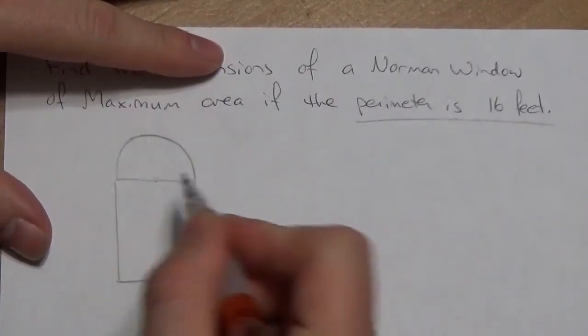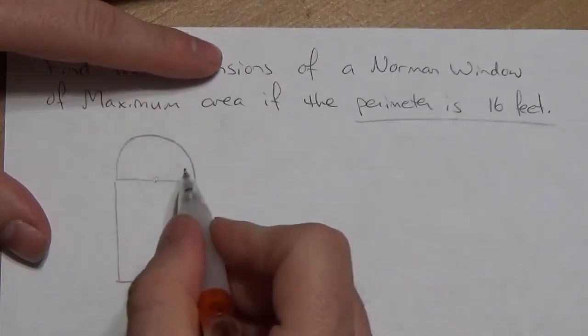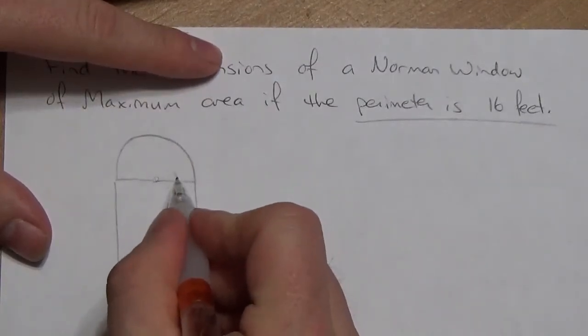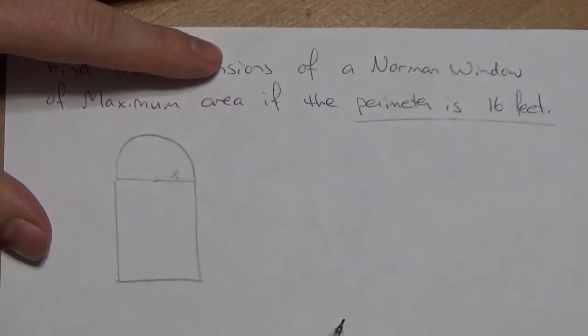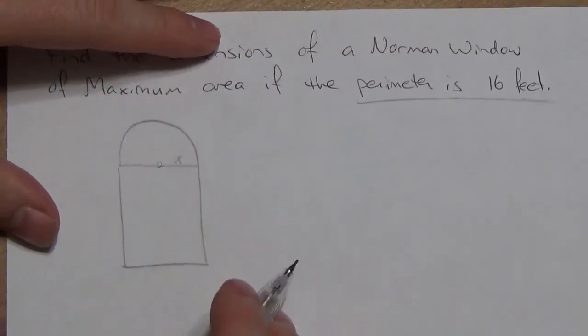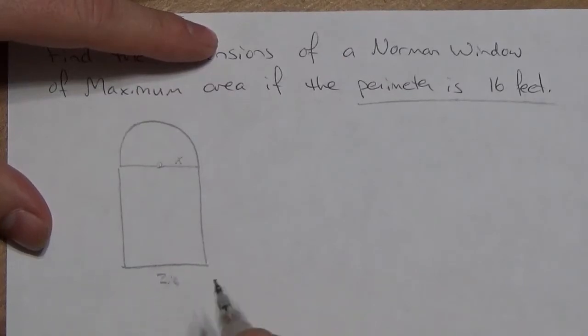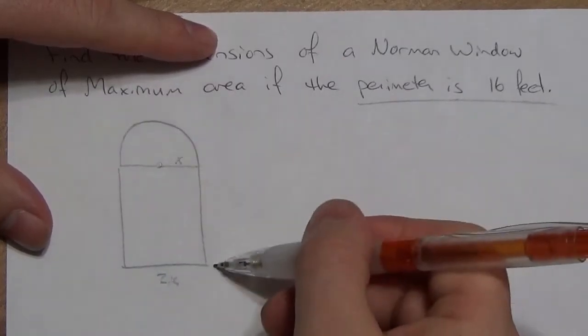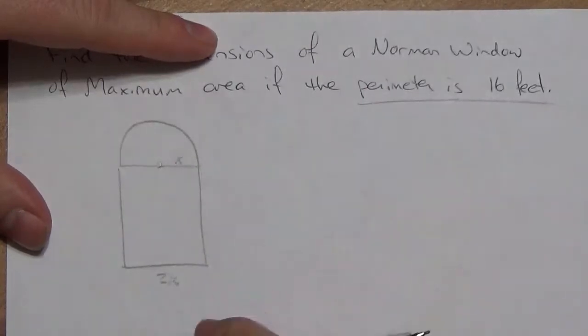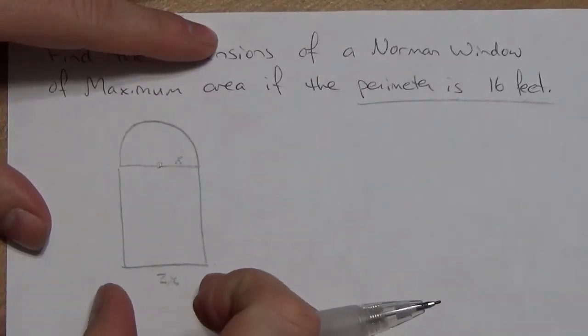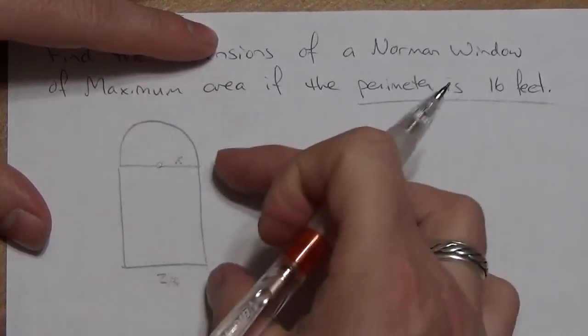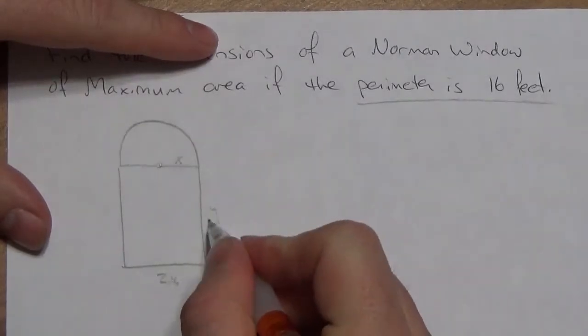So, right here would be the center of that circle. And I'm going to use x to label the radius of the circle. Now, if that's true, if we follow that, that means this length right across here is going to be 2x. And then, well, there's really no specific relationship between the width and the length that we can tell right off the bat. So, I'm just going to call that y.